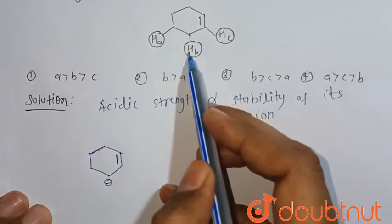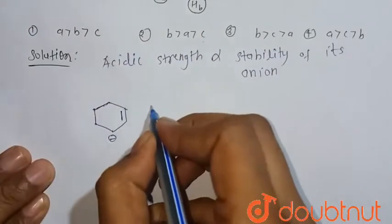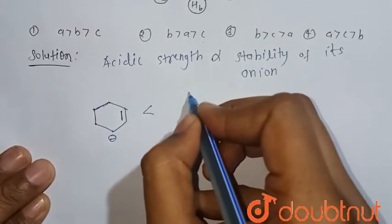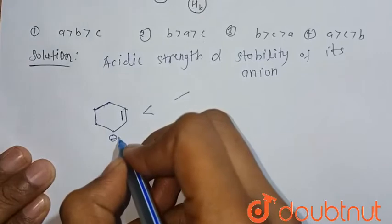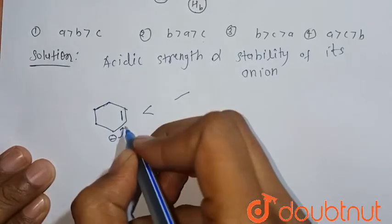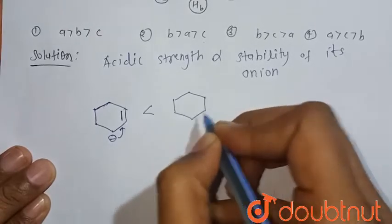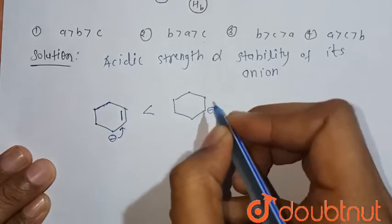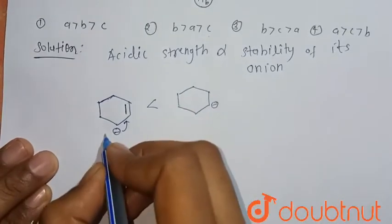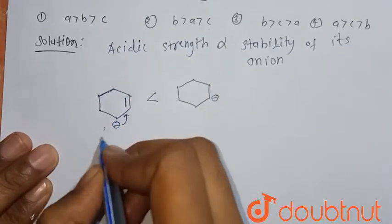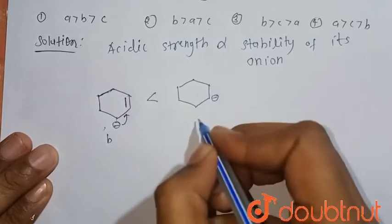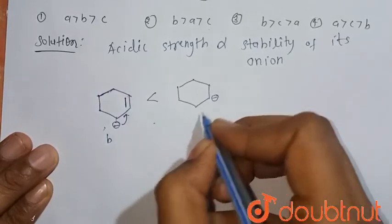After removal of the B hydrogen, because this is in conjugation. Then it is this, that is C. This is Hb after removal of the B hydrogen.